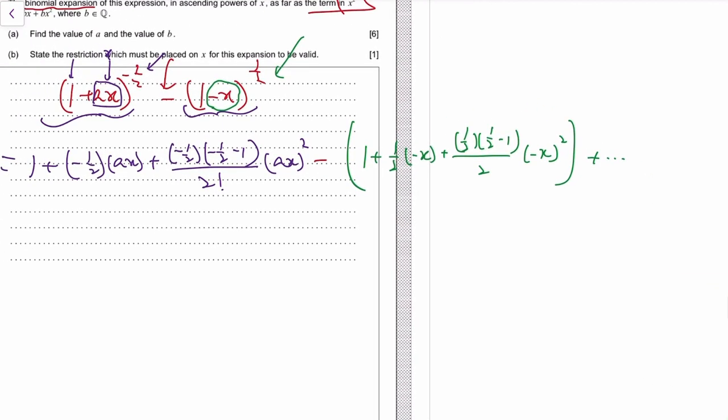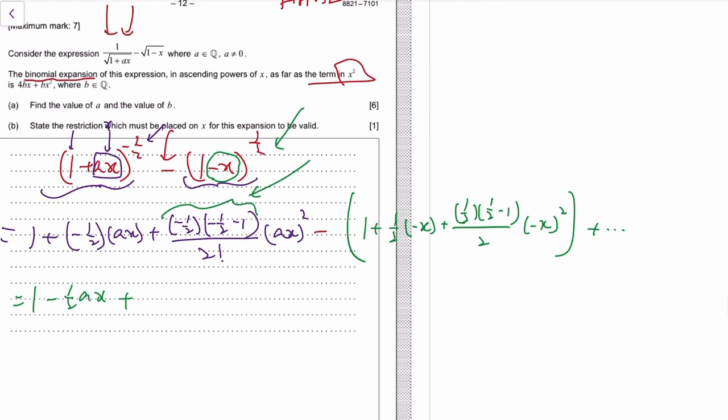We'll simply simplify them and then subtract them. So this is 1 minus half a x plus, we need to figure out what this is. I mean usually I would use a calculator to do this but this is paper 1.